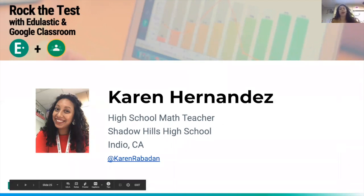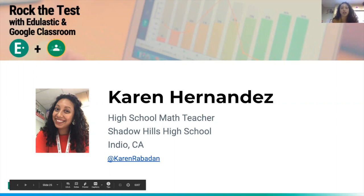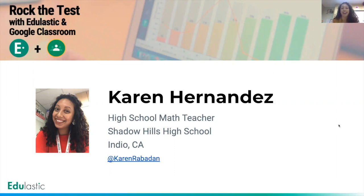A little bit about me: I've been teaching for eight years. I did two years in middle school — my first year was seventh grade, second year was eighth grade — and then the past six years I've been teaching at the high school level at Shadow Hills. Our slogan is Knights Do It Right, and I'm very big on promoting our students and the school culture.